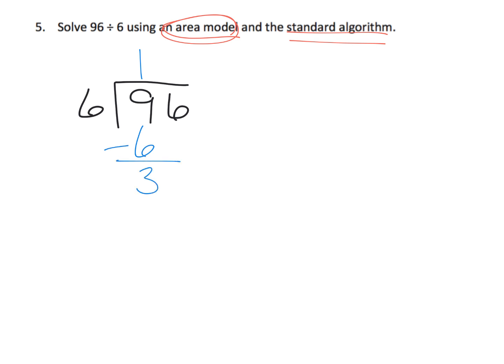Those 3 tens plus the 6 ones left over means we now have 36 ones left over. And 36 ones divided amongst 6 groups means each group gets 6 dots. That means we've used up all 36 dots and we have nothing left over. So our standard algorithm shows that the answer is 16.